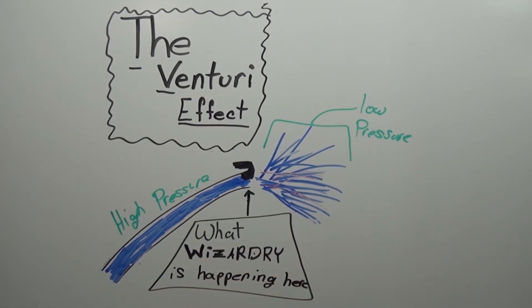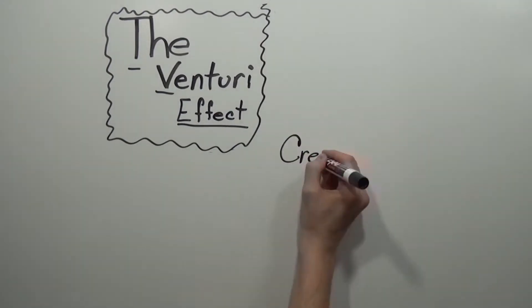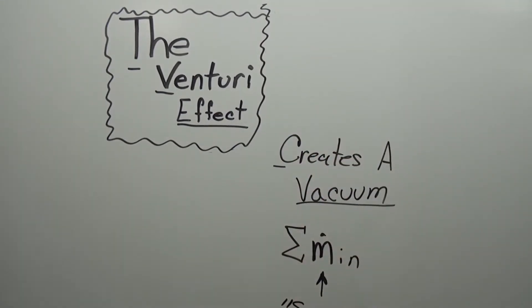What's happening is, as you restrict flow, you're reducing the area through which water is coming out, creating a low pressure vacuum and a high velocity situation.